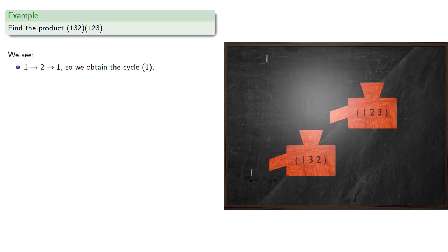What if we apply (1,3,2) to (1,2,3)? So again, we read from right to left. So first we apply (1,2,3), and then (1,3,2). So starting at 1, we see 1 gets sent to 2, and 2 gets sent to 1. And that's back where we started, so we obtain the cycle (1).